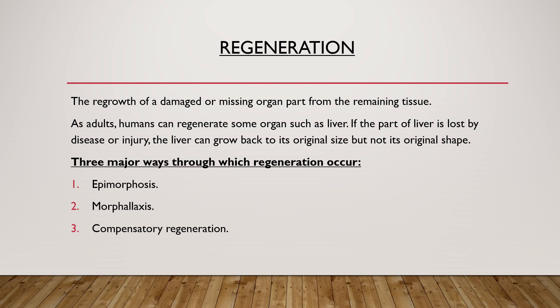First is regeneration. What happens in regeneration is the regrowth of a damaged or missing part from the remaining tissue. Regeneration means regrowth — anything which regrows after damage or after it goes missing. So, the regrowth of a damaged or missing organ part from the remaining tissue is known as regeneration. In humans, it occurs in the liver.